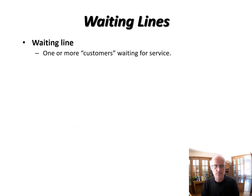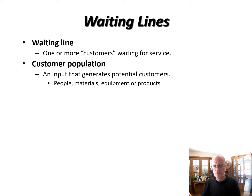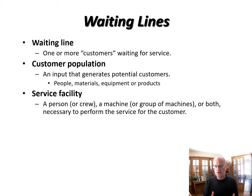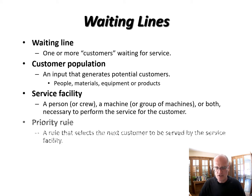A line is obviously one or more customers waiting for service — it is how long they are waiting. The customer population is how many people might come and wait in line. In some simple introductory operations models we assume it's infinite, but the size of the customer population is an important concept. The service facility is where we provide service to the customer who is lining up.